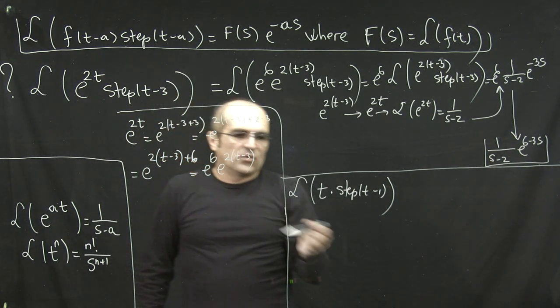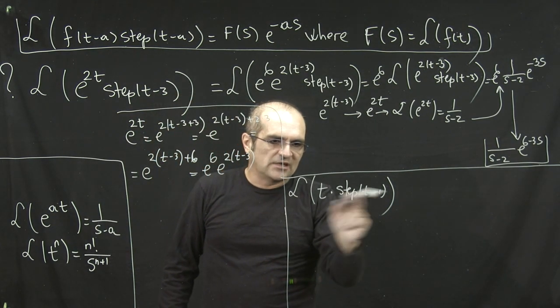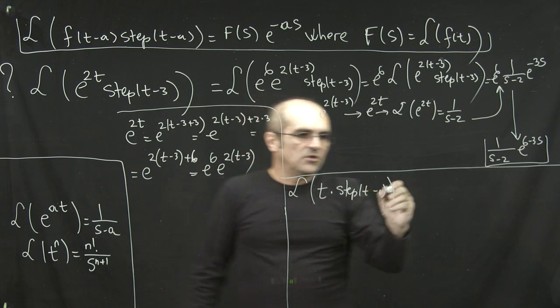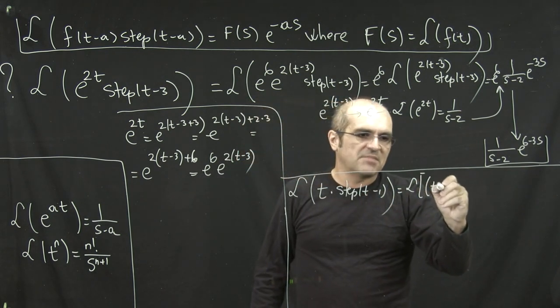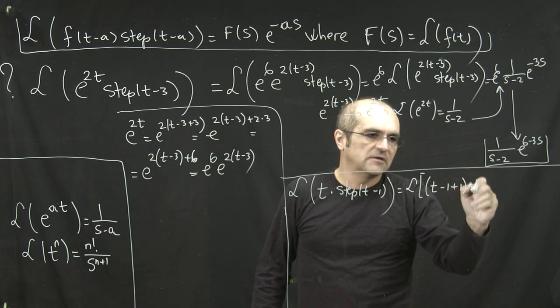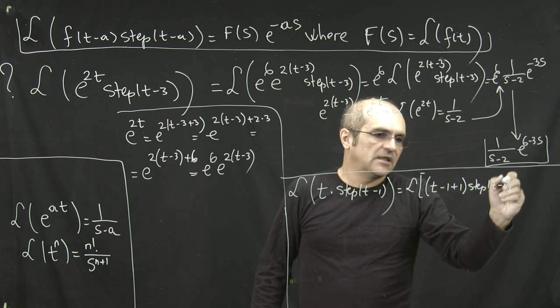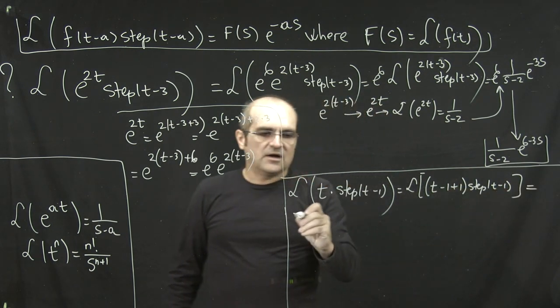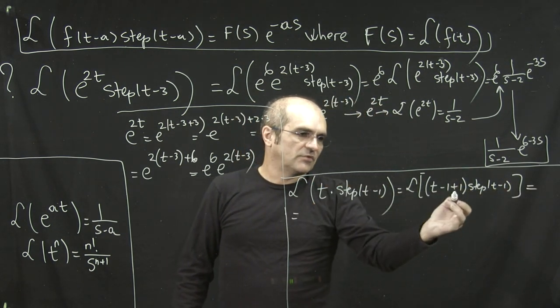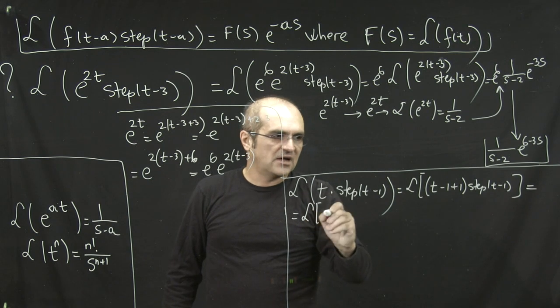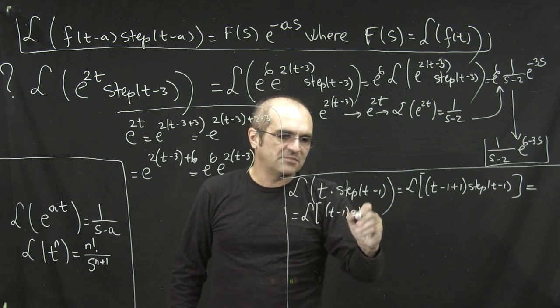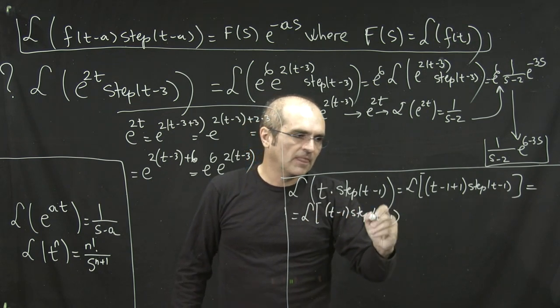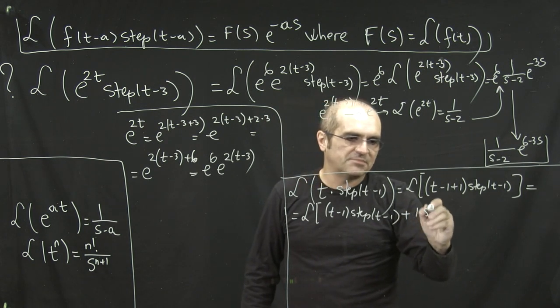Just like before, the idea is to subtract and add 1. So your t can be written as (t minus 1) plus 1, and then you distribute this step(t minus 1) over this plus, and it becomes (t minus 1)·step(t minus 1) plus 1·step(t minus 1).